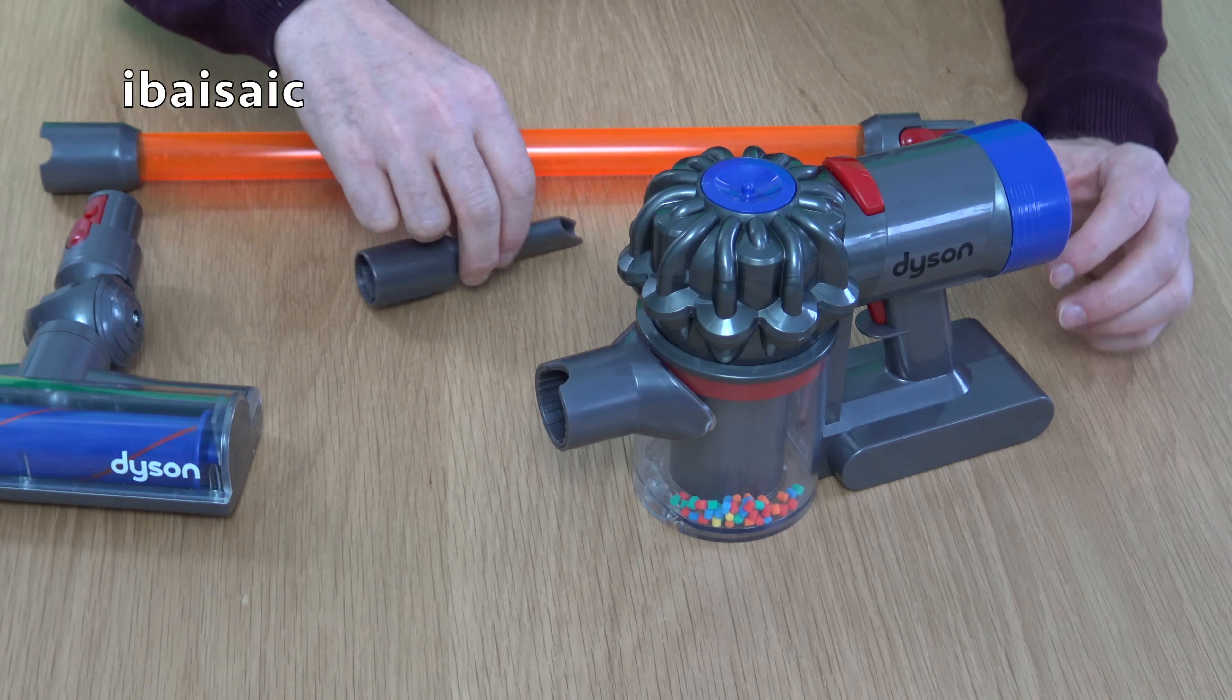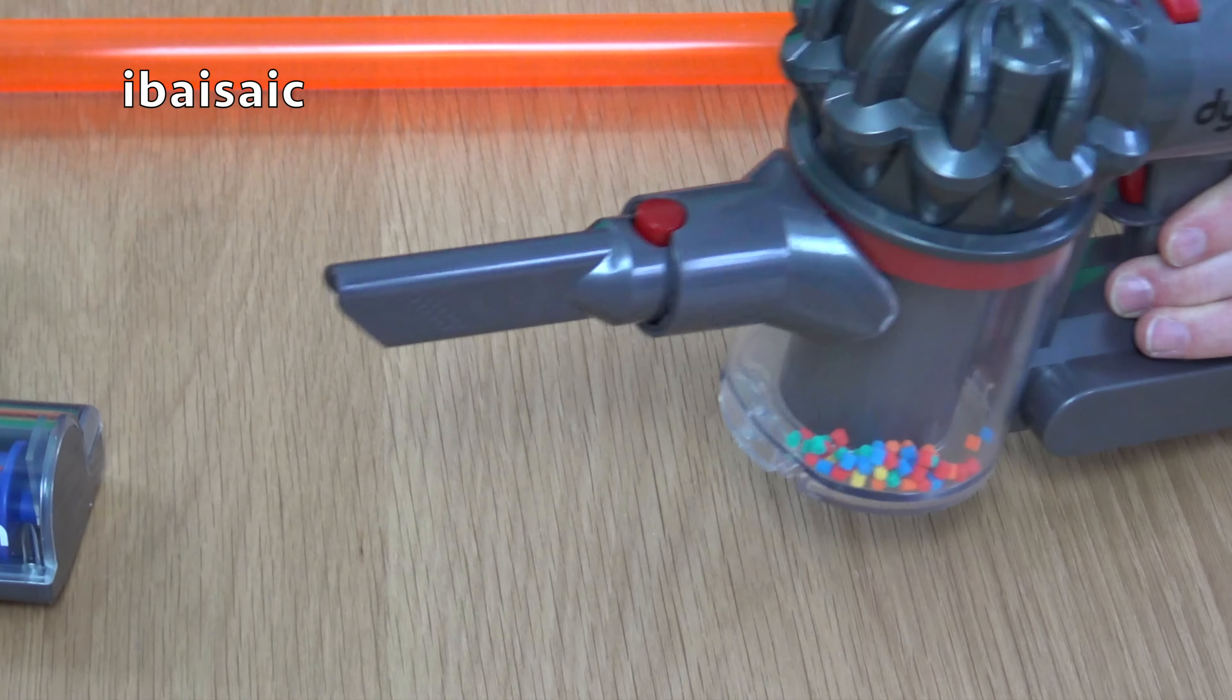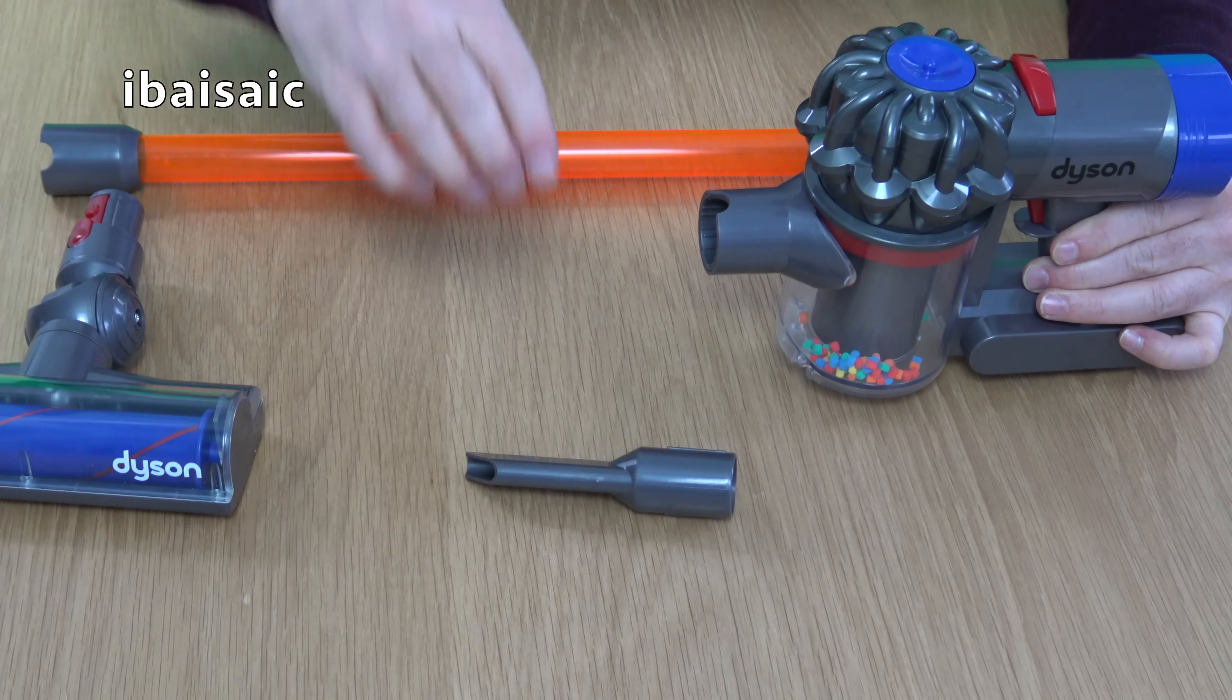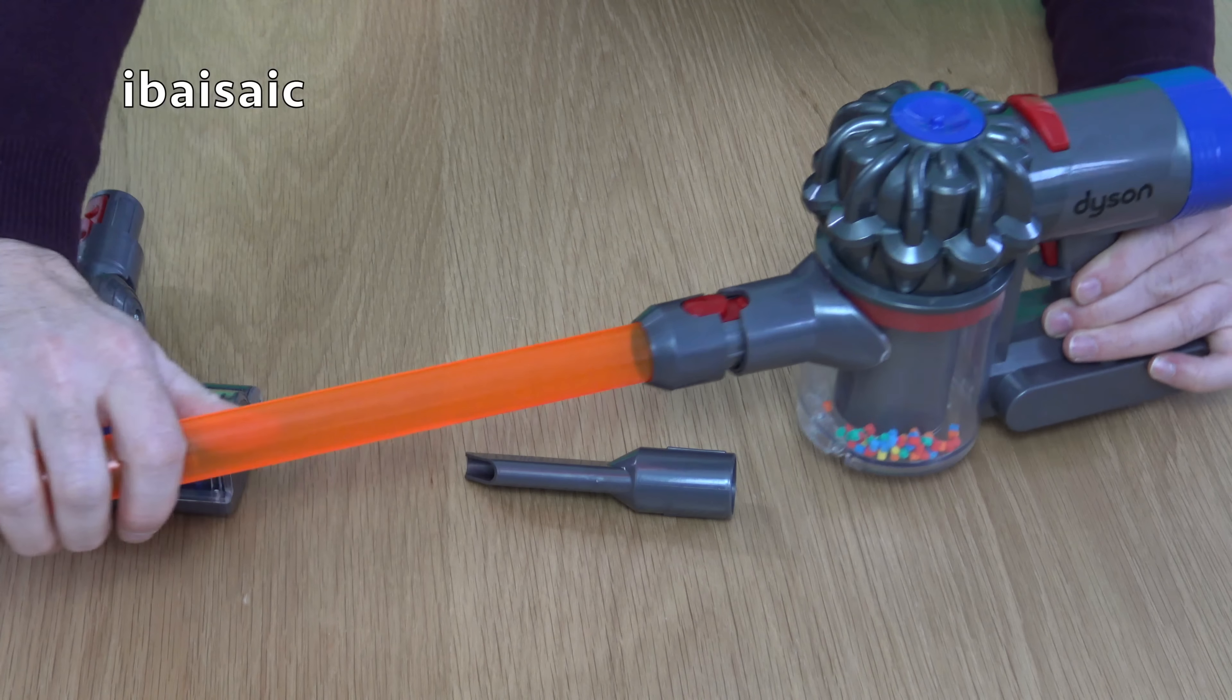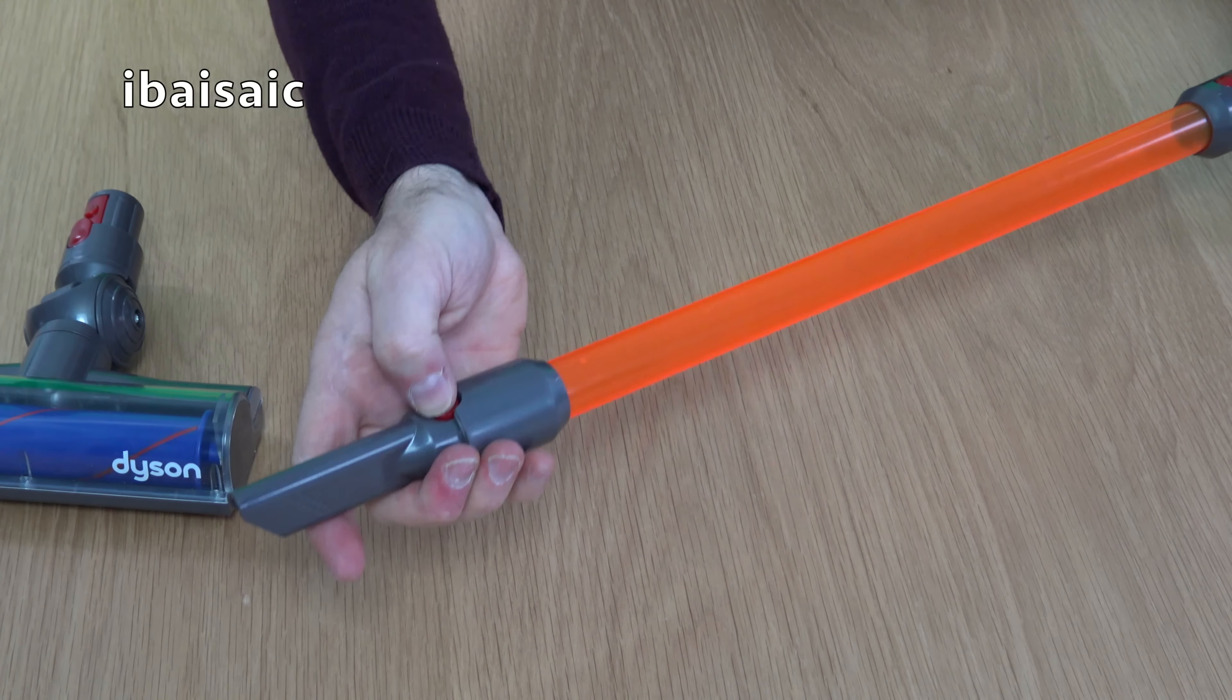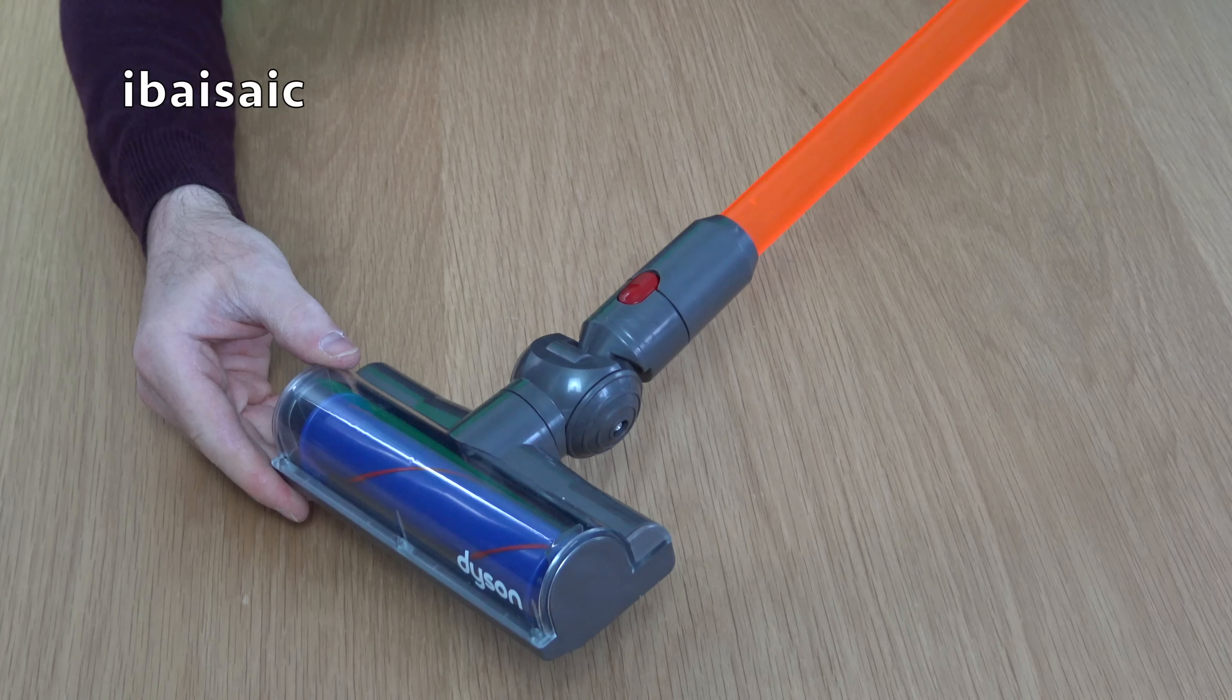Just like a real Dyson, we can connect the crevice tool directly to the cleaner itself. Is it going to click like a real Dyson? Well, almost. So now we can pick up little bits using the crevice nozzle. You can also put on the big wand, and that fits on again with a nice click. And you can put the crevice tool onto the end of the wand as well. And of course, if we want to clean our carpets and floors, we can stick the main nozzle on, just like the real thing.